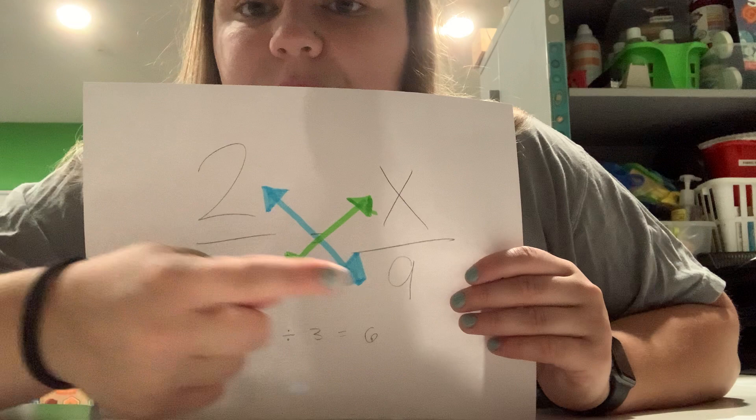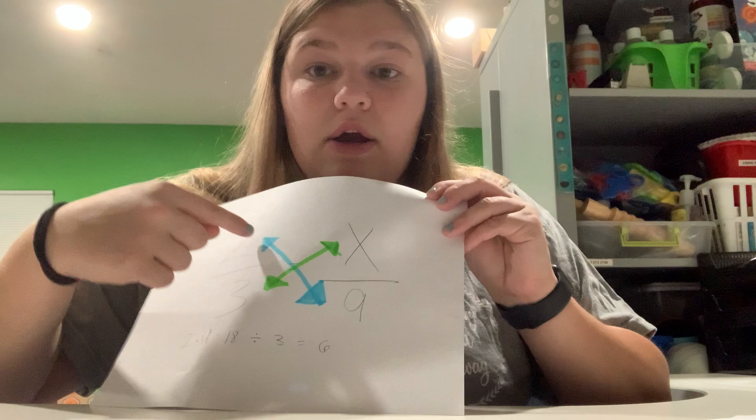Does everyone understand? Let's go back over it. We're looking for the numerator, so we do the blue line first: two times nine — you go right across, cross multiply. Then you divide it all by three. Does everyone get it? Awesome, good job kiddos!